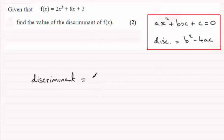b will be 8 so we've got b squared which is going to be 8 squared minus 4 times a, a is the 2, times the c which is 3.